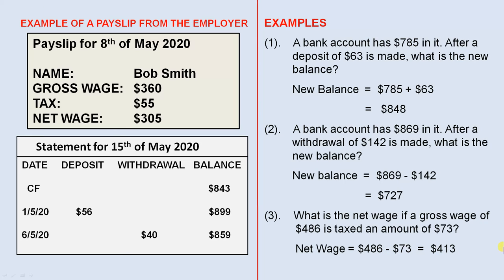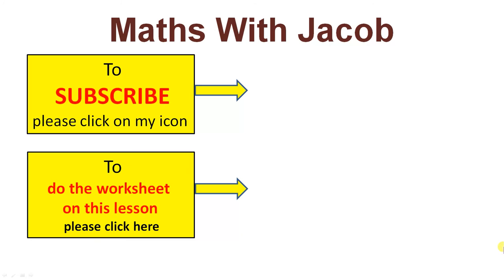This video has given us a brief introduction into some terms used by financial institutions. We've looked at examples of what a payslip might look like and what a statement might look like, along with some simple problems involving deposits, withdrawals, gross wage, and net wage. To be continued...